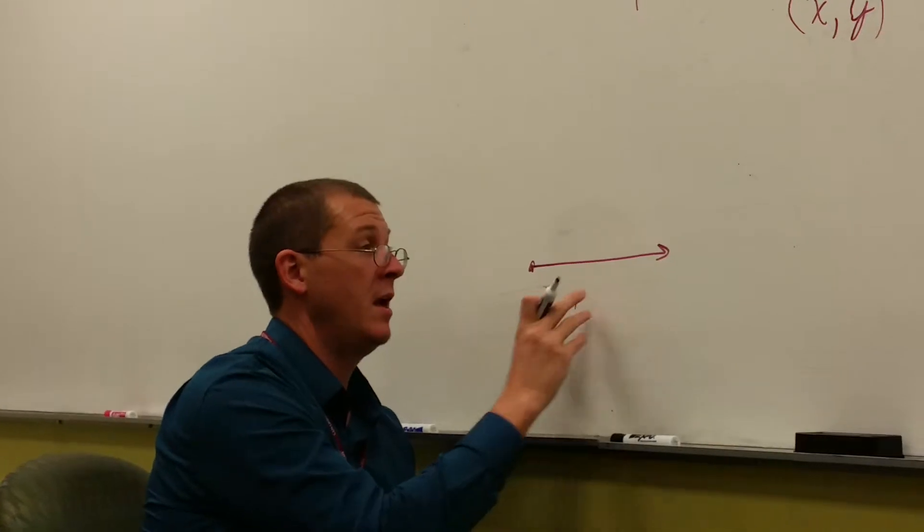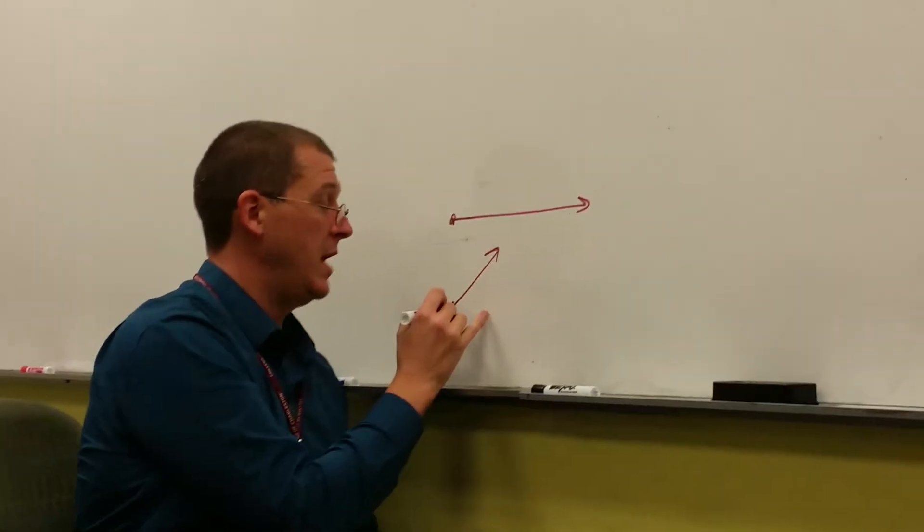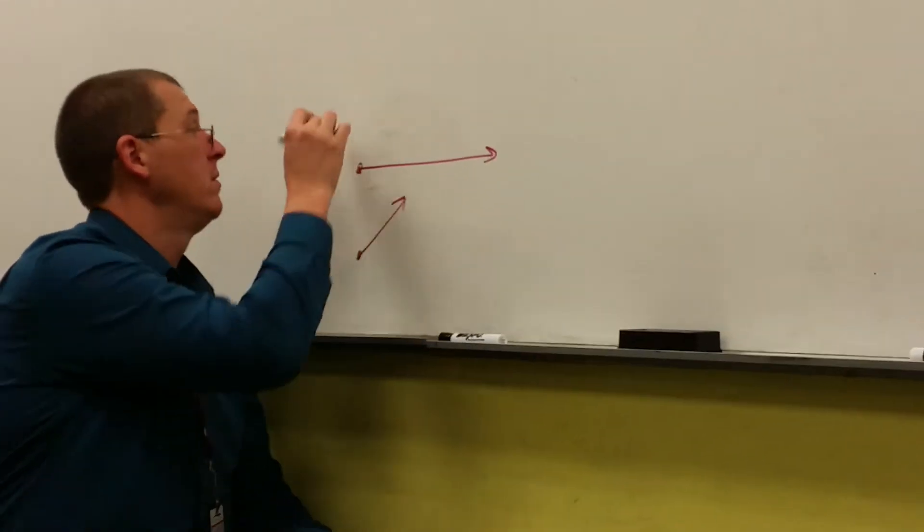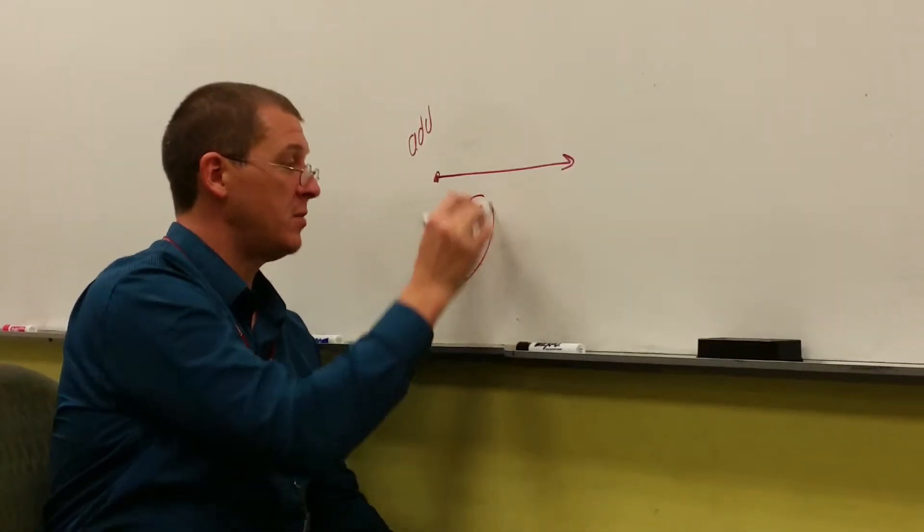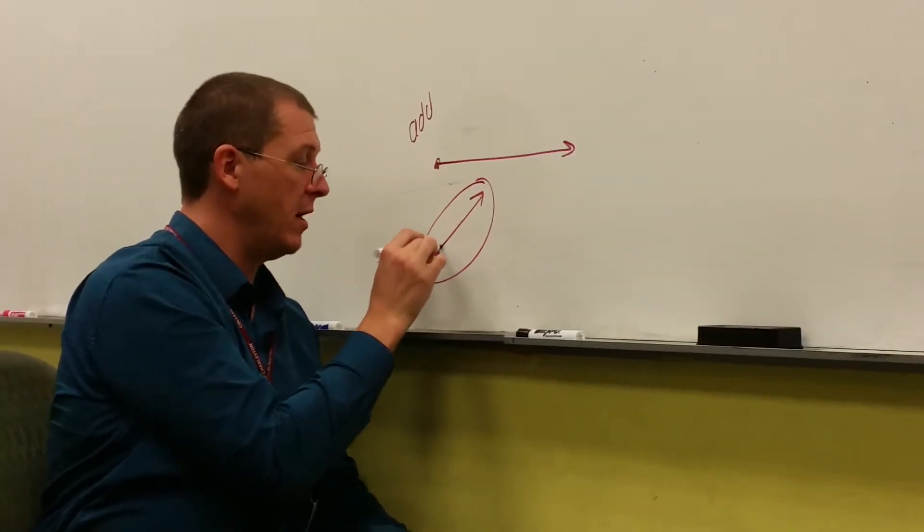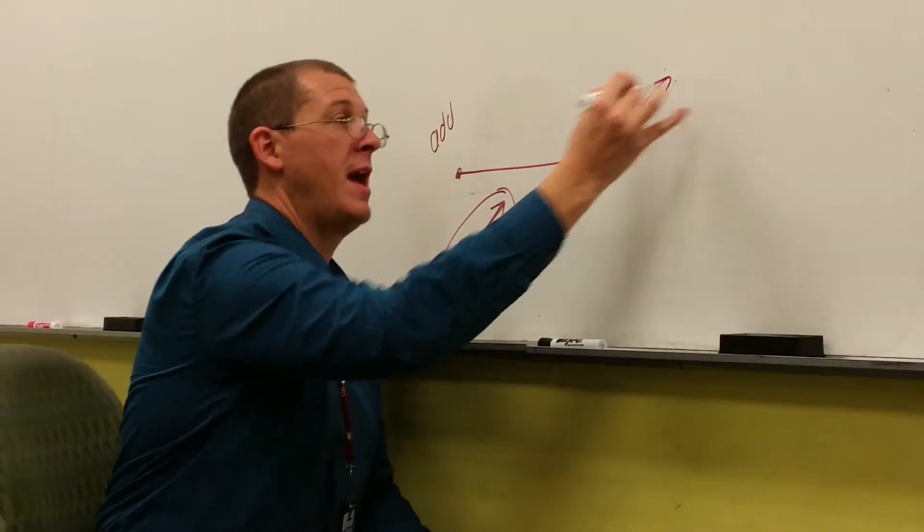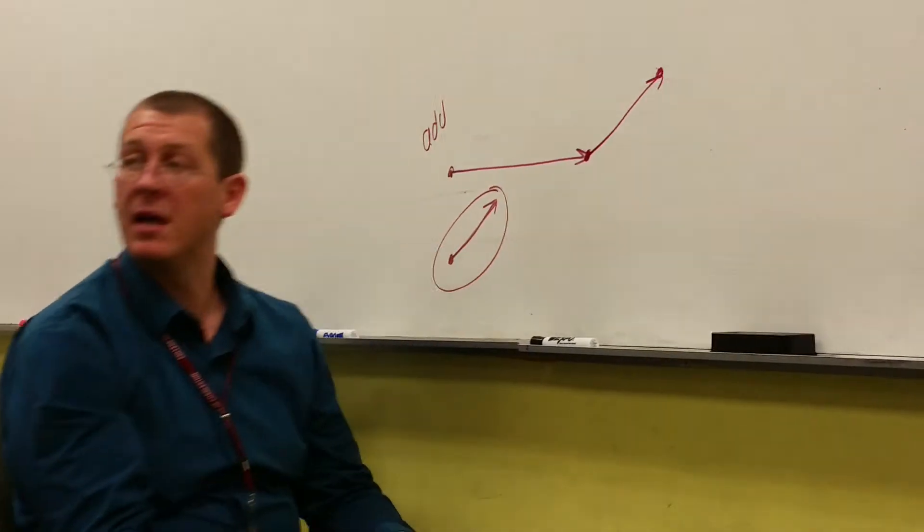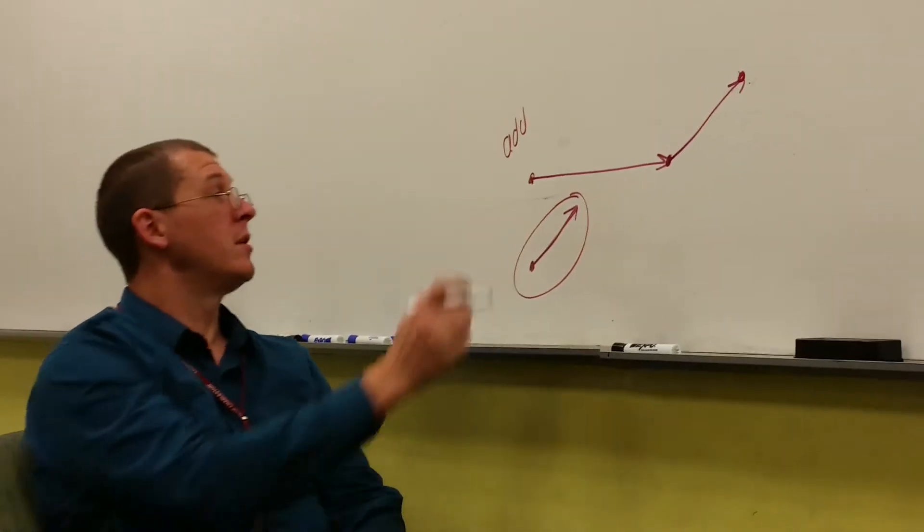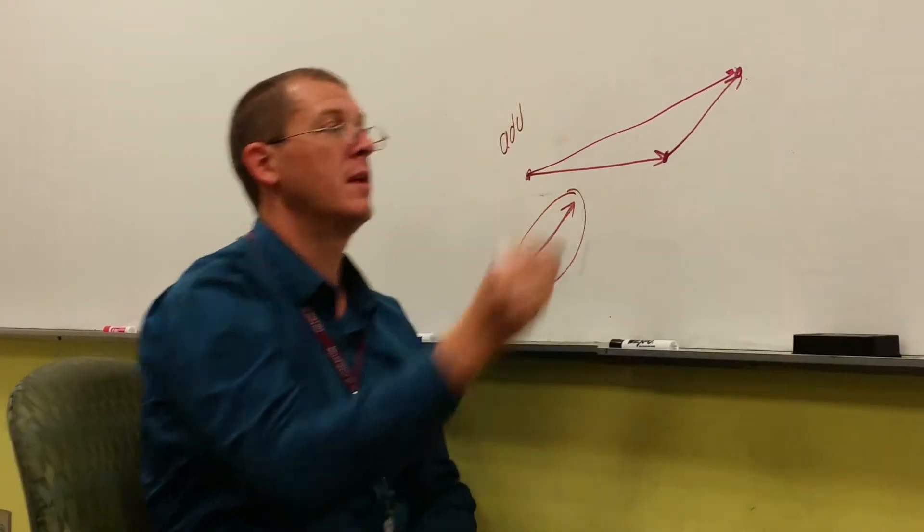Well, we're just going to take this thing and we're going to put it right here. To add two vectors together, I'm going to pick this one up and go, well, this one starts somewhere and it goes like this. So I'm going to start it right here and have it go like that. And there are the two vectors added together. And the result of adding those two things together is this little piece right there.